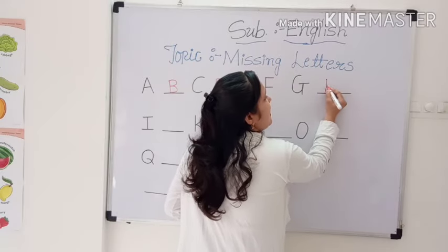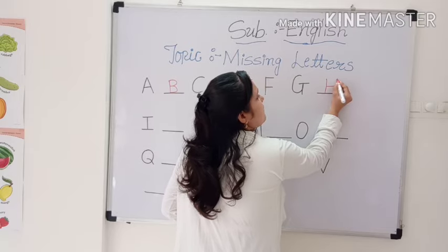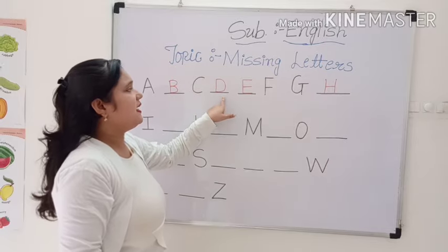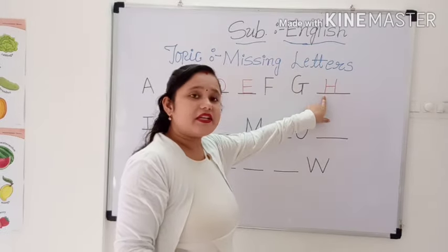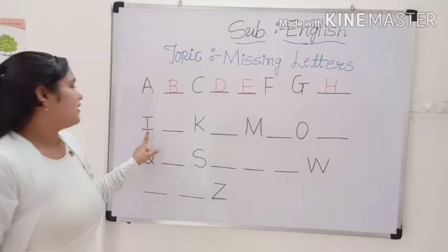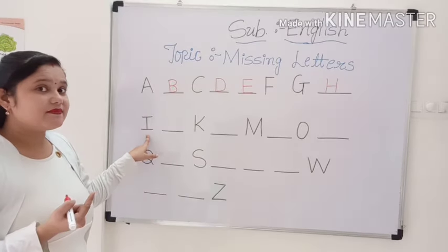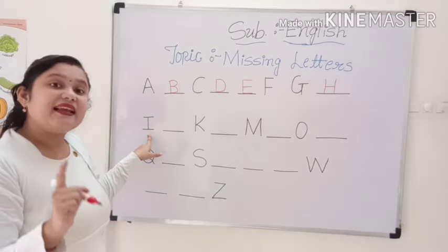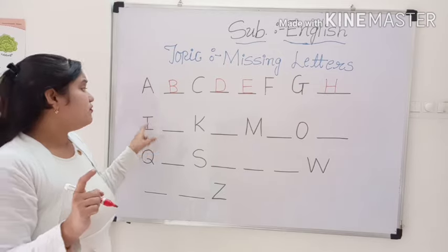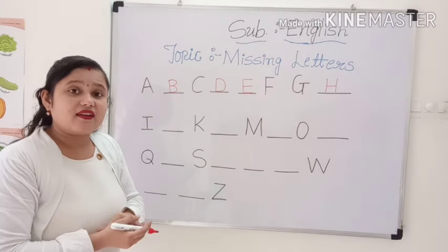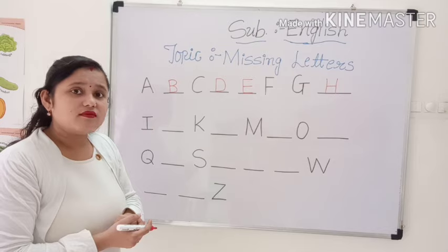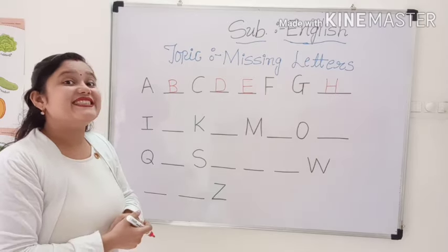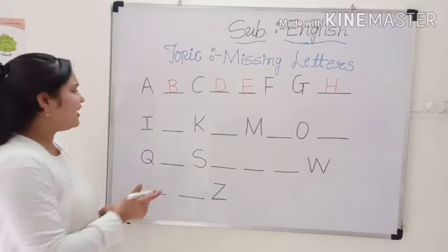Capital letter H. A, B, C, D, E, F, G, H. Now, which letter is this? I. This is capital letter I. And which letter comes after I? Do you know? Yes. Capital letter J. Very good.